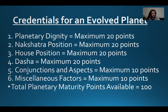The third criteria is the house position and the relative power and comfortability that the planet experiences in that house. For example, the Sun loves the first house, Jupiter loves the ninth house, Mercury loves the third house, and the Moon loves the fourth house. These are examples where a planet may gain its maximum poise just from its house position, therefore helping its evolution or maturity.